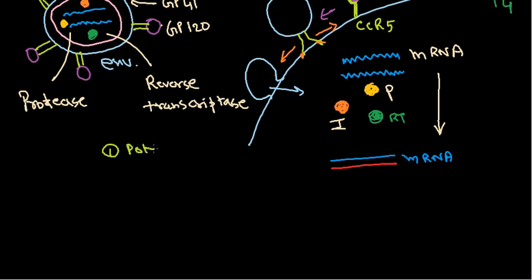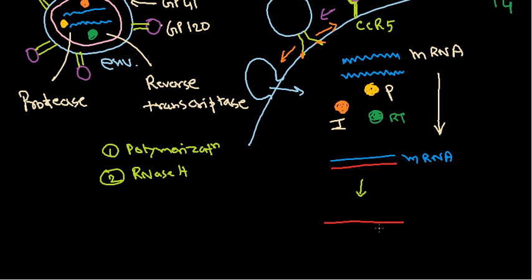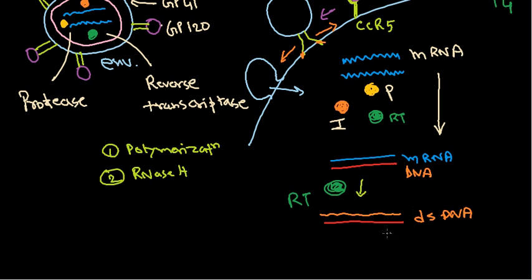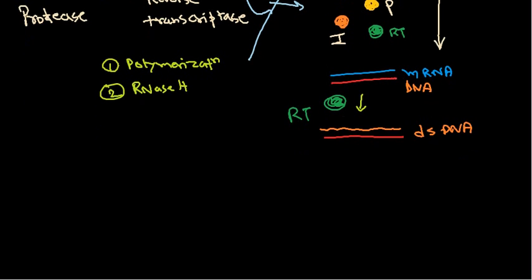Reverse transcriptase has two important functional sections: one is responsible for polymerization, and the second is responsible for RNase H activity — RNA-degrading activity. First, a single-stranded DNA is made using the RNA as a template; then the RNA strand is degraded. The remaining single-stranded DNA is used as a template to copy a second DNA strand, producing double-stranded DNA (dsDNA) using reverse transcriptase.